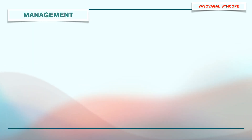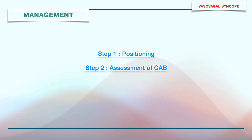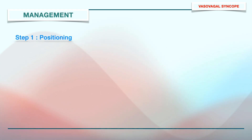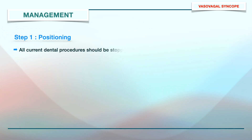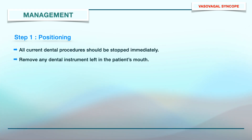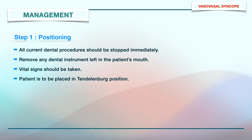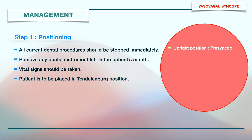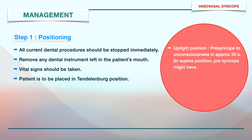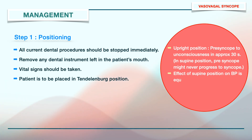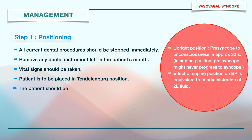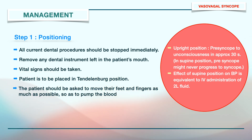Coming to the management of syncope, it can be divided into three steps. Step 1 is Positioning. All current dental procedures should be stopped immediately and any dental instrument left in the patient's mouth should be removed. Vital signs should be taken and the patient should be placed in a Trendelenburg position, i.e., a supine position with legs slightly elevated. If the patient is in an upright position, presyncope can lead to unconsciousness in approximately 30 seconds, while in supine position, presyncope might never progress to syncope. The effect on blood pressure by placing an unconscious hypotensive patient into supine position is equivalent to intravenous administration of 2 litres of fluid. The patient should be asked to move their feet and fingers as much as possible so as to pump the blood back to the heart.